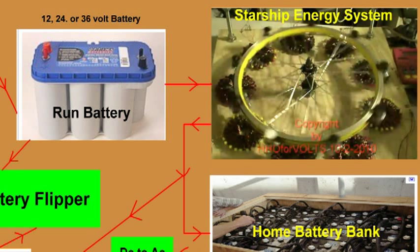And so the power comes out of the run battery to the Starship motor, and it runs the motor. And out of the system, we bring energy out. This is the free energy.